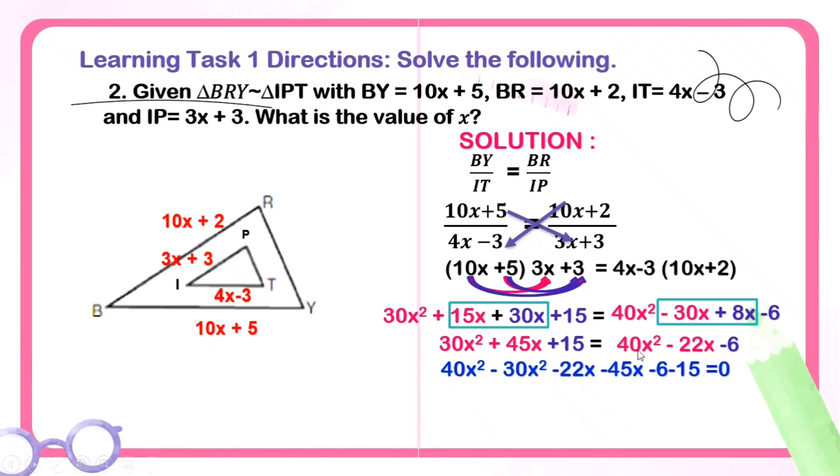Here, we can combine negative 30x plus 8x. Negative 30 plus 8 is negative 22x. Then, we copied the 40x squared and negative 6. Then, simplify. We equated it to 0. We moved 30x squared, 45x, and 15 to the other side, so their signs changed. 40x squared minus 30x squared is 10x squared. Negative 22x minus 45x is negative 67x. Negative 6 minus 15 is negative 21, equal to 0. As you can see, it became a quadratic equation.